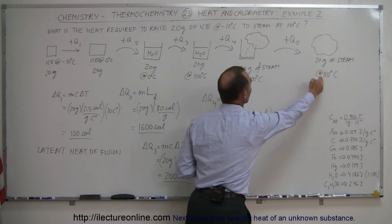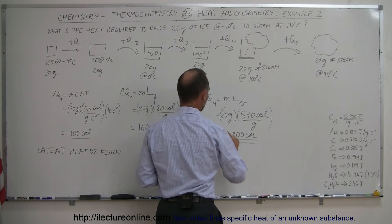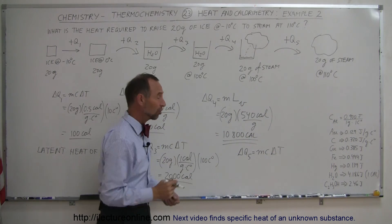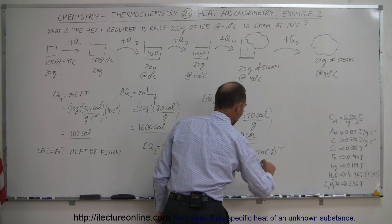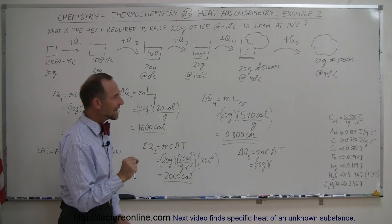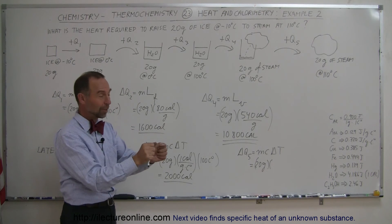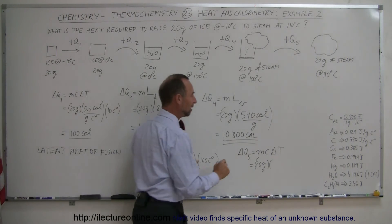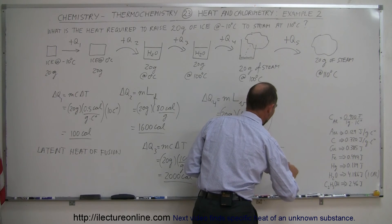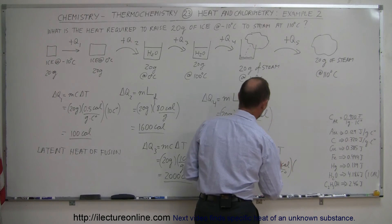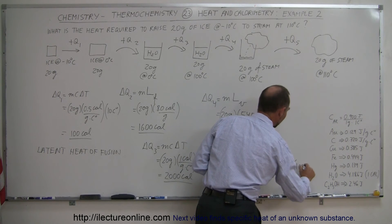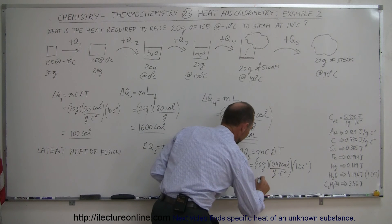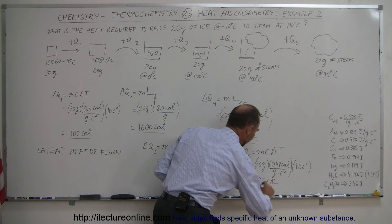Finally, we want to raise the temperature of steam from 100 to 110 degrees centigrade. So Q5 = MC delta T — no phase change, simply a change in temperature. We still have 20 grams. The specific heat of steam is about 0.48 calories per gram per centigrade degree, just slightly less than that of ice. The change in temperature is 10 centigrade degrees. So Q5 = 20 × 0.48 × 10 = 96 calories for that last step.